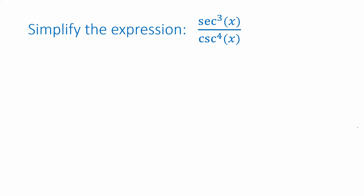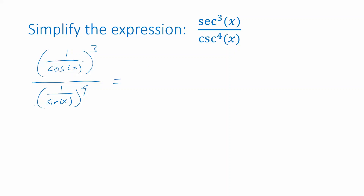Let's look at another example: secant cubed of x divided by cosecant to the fourth of x. I'm going to use the earlier relationships, reminding us that secant is 1 over cosine, so this numerator is 1 over cosine, quantity cubed. And cosecant is 1 over sine, so the denominator is that quantity raised to the fourth power. Distributing the exponent 3, I get 1 cubed, which is just 1, over cosine of x cubed.